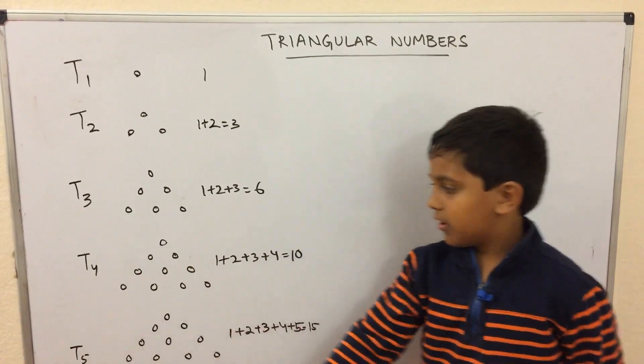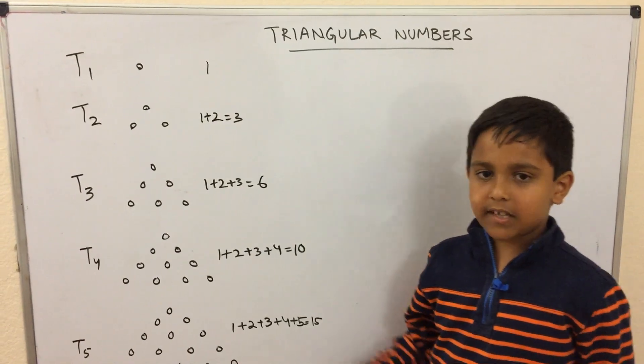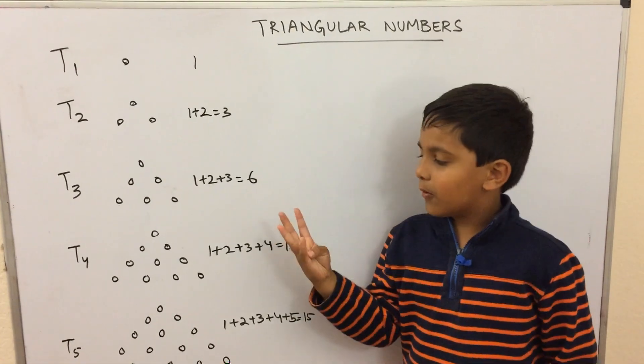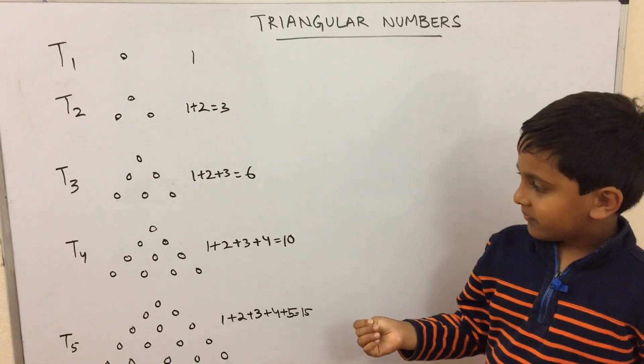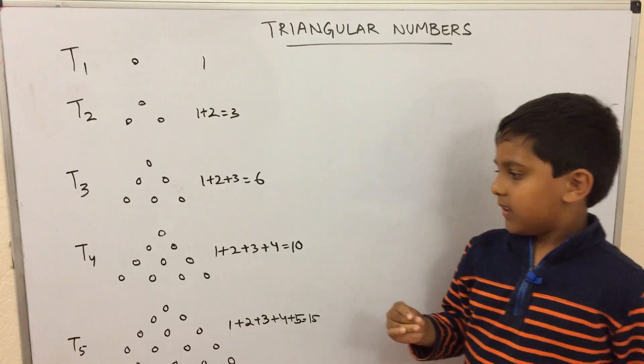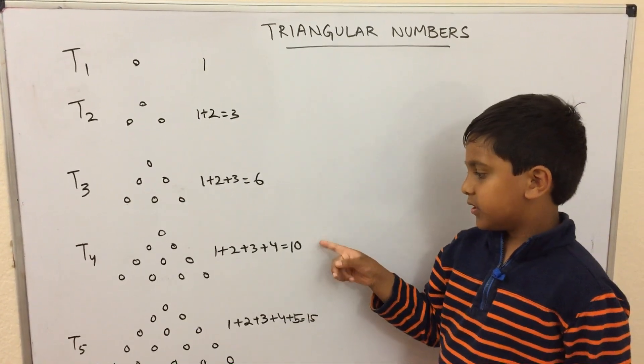The fourth triangular number is the number of objects needed to form this equilateral triangle where each side has length 4. So the first row has 1, the second row has 2, the third row has 3, and the fourth row has 4. So it's 1 plus 2 plus 3 plus 4 which is 10.